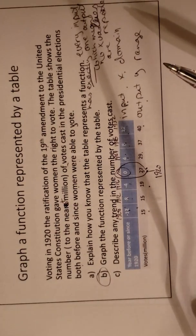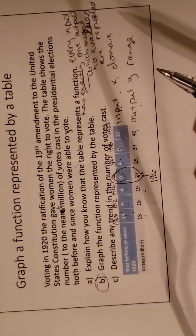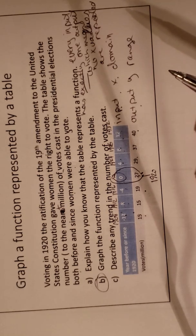A says how do I know it's a function? Well, every input has exactly one output, which means no X values are repeated. That's what it means. All right, describe the trend.